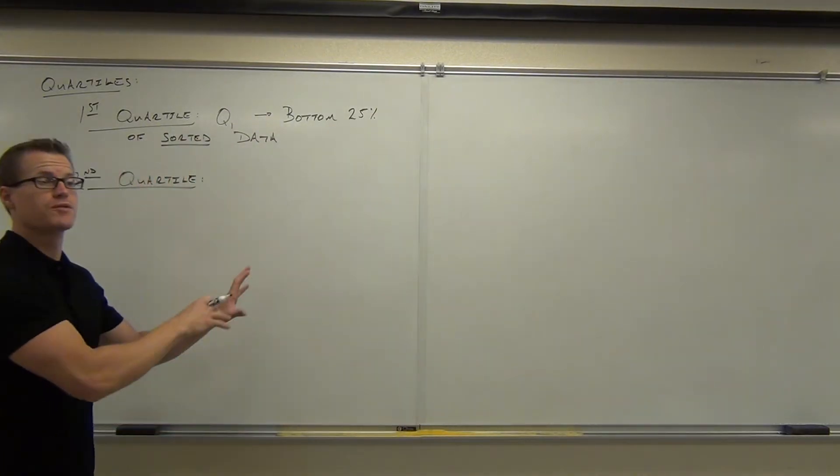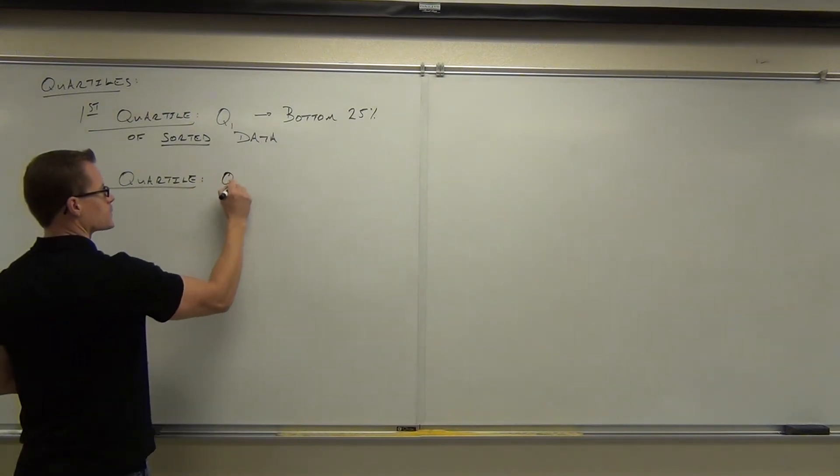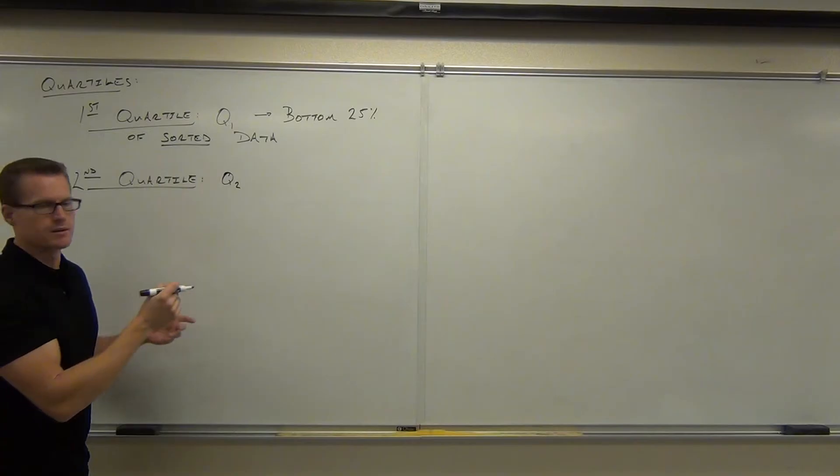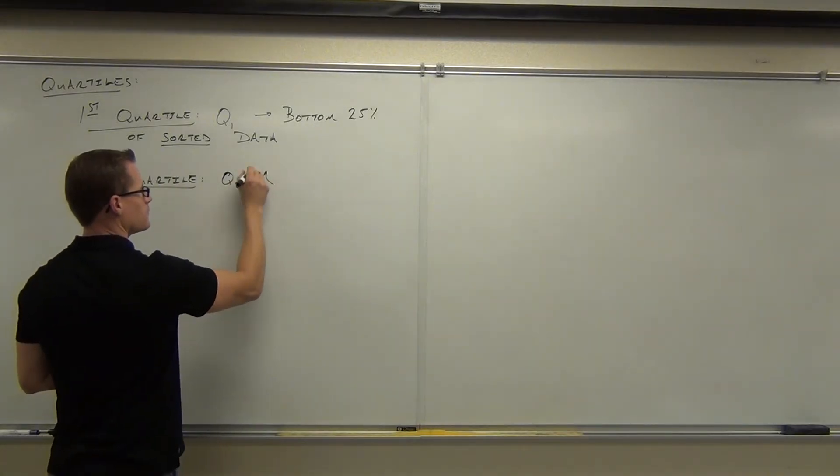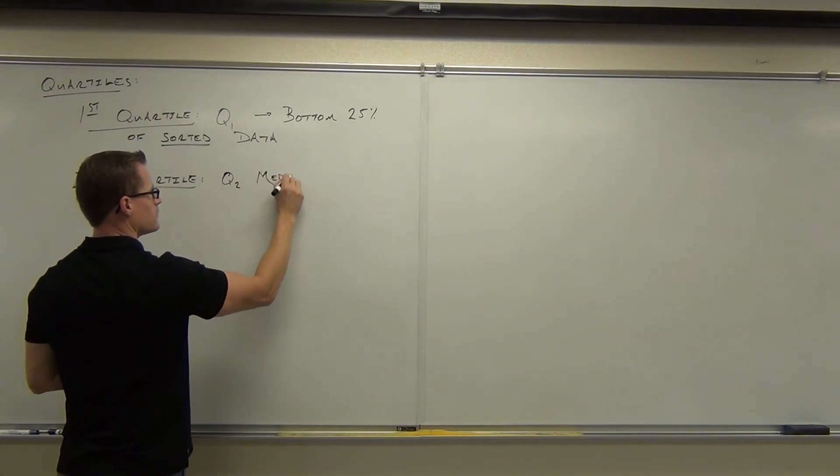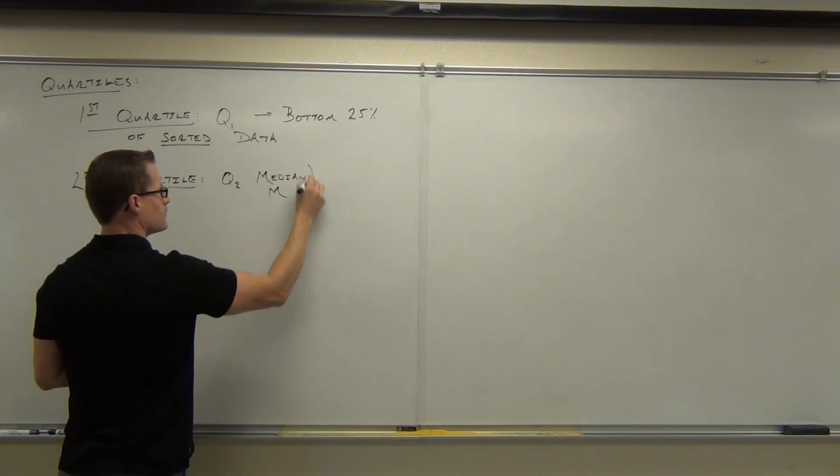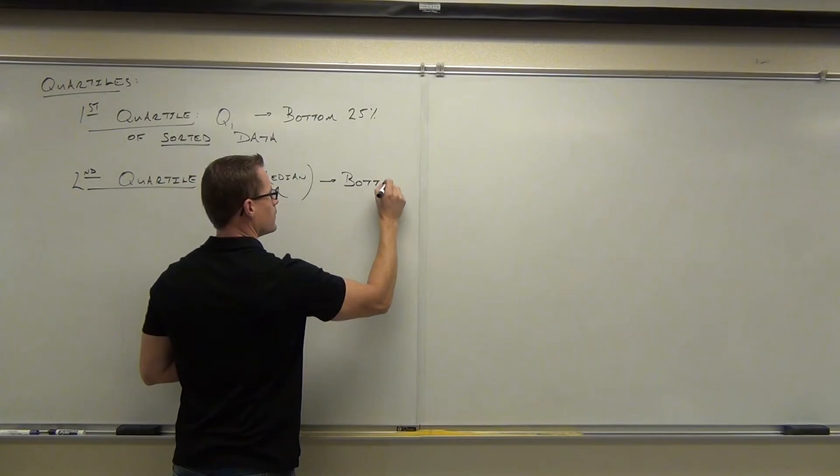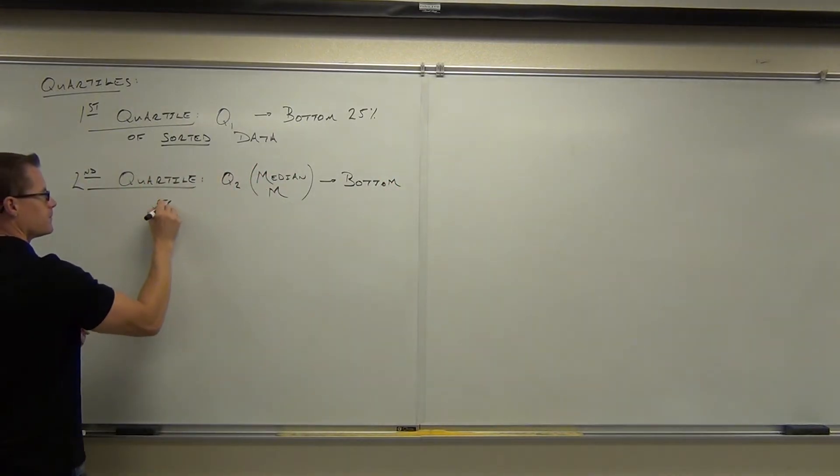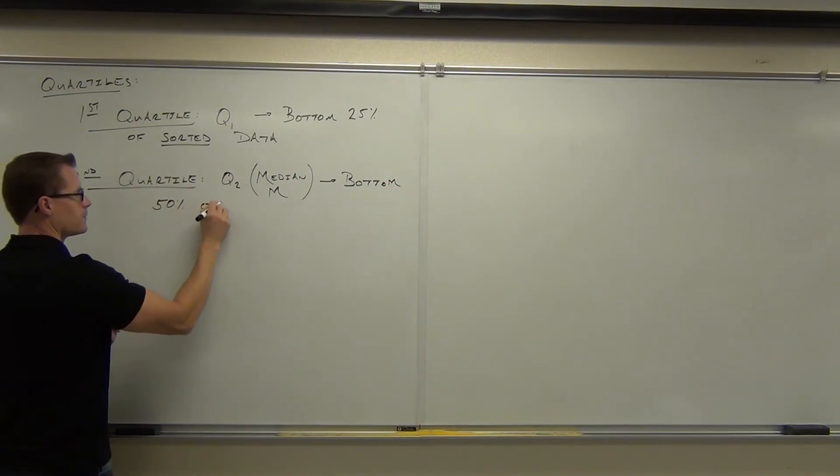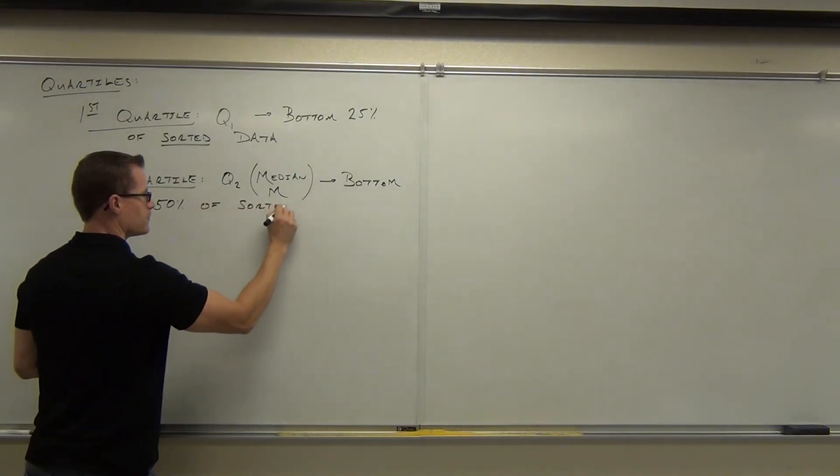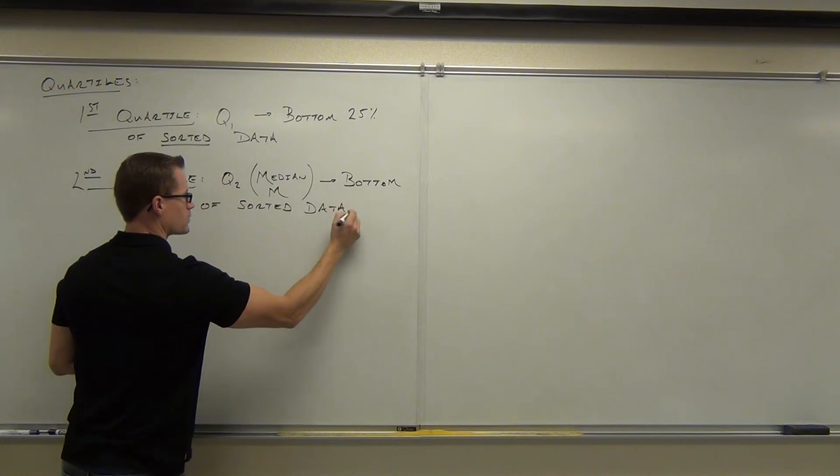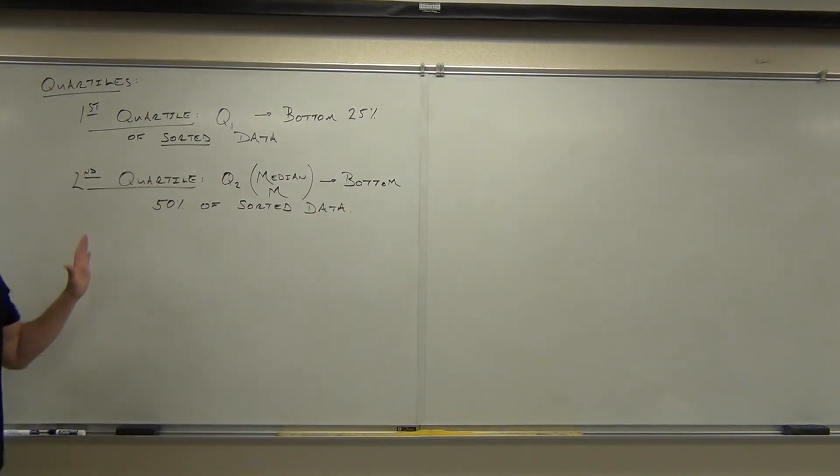So I'll write Q2, but you're never going to see that. You're going to see median. Okay, so we have Q1, which is the bottom 25%, Q2, or the median, which is the bottom 50%. Q3, what do you think Q3 is going to be?